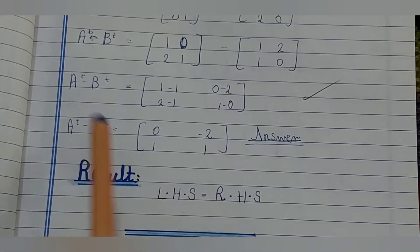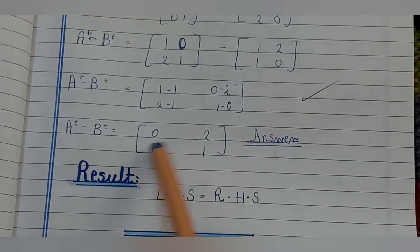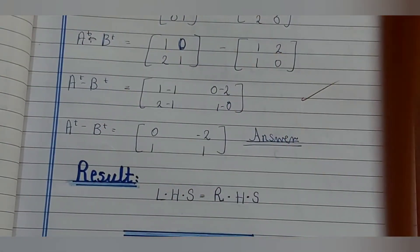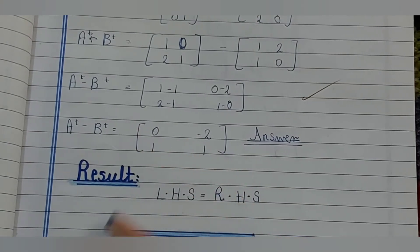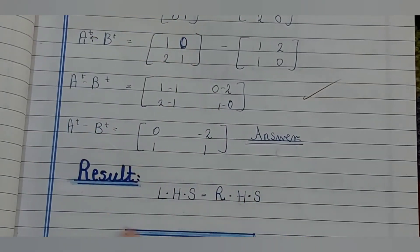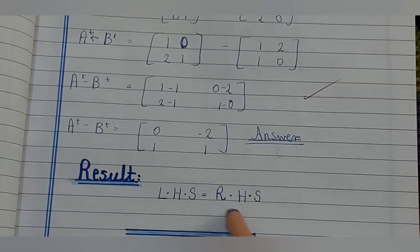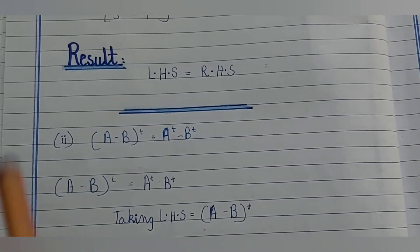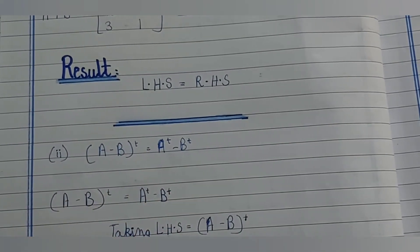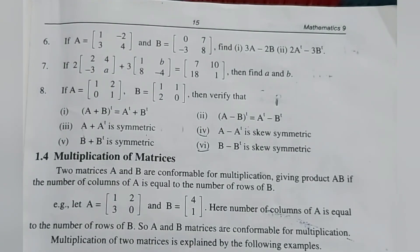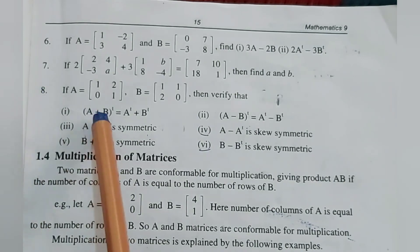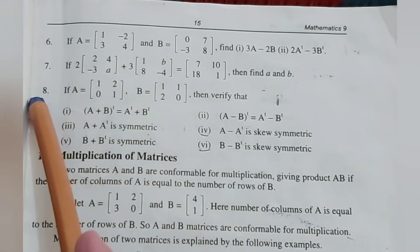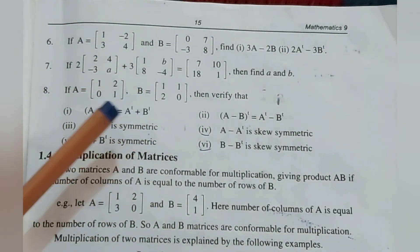Since the right-hand side equals the left-hand side, part 2 is also verified: (A−B)^T = A^T − B^T. This completes Exercise 1.3, Question 8, parts 1 and 2. In the next video, we will do the remaining parts of Question 8. Thank you, Allah Hafiz.